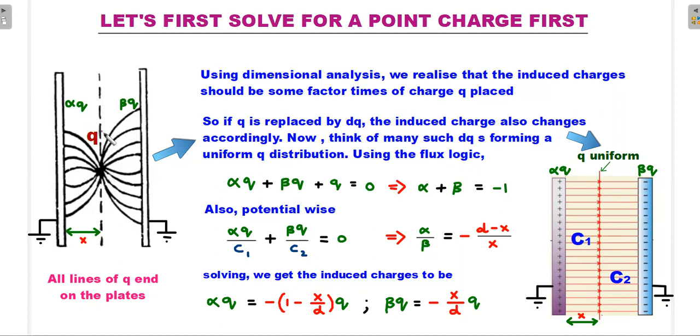If q were to be replaced with an infinitesimally small charge dq, then this left side charge would become alpha times dq and the right one induced will become beta times dq.